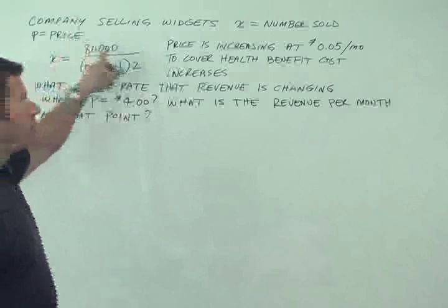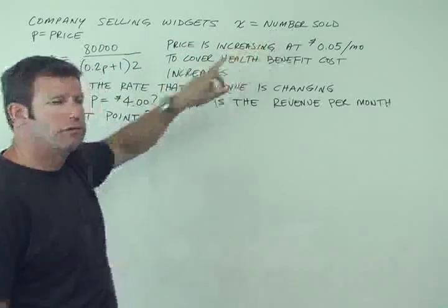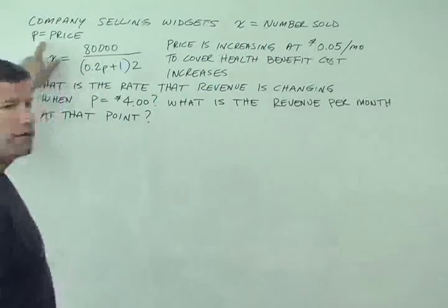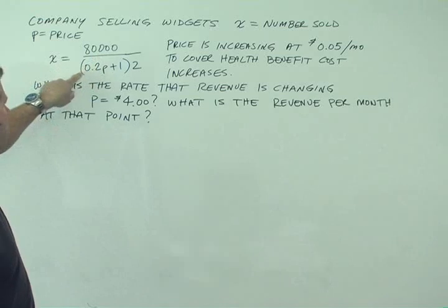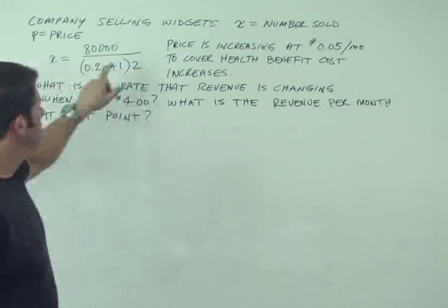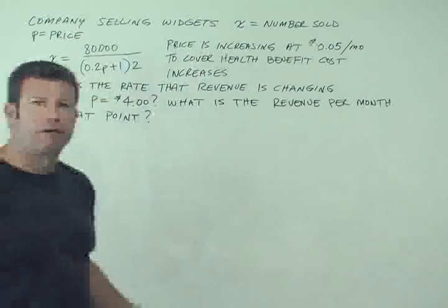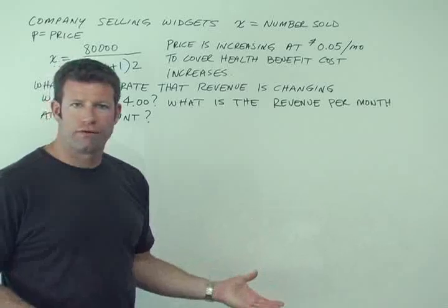Some company is selling widgets, and the x variable denotes the number sold, and p denotes price. And they've given us this formula, x equals 80,000 divided by the quantity 0.2p plus 1 times 2, which relates the number sold and the price. So obviously as price goes up, at some point they're going to sell fewer units.